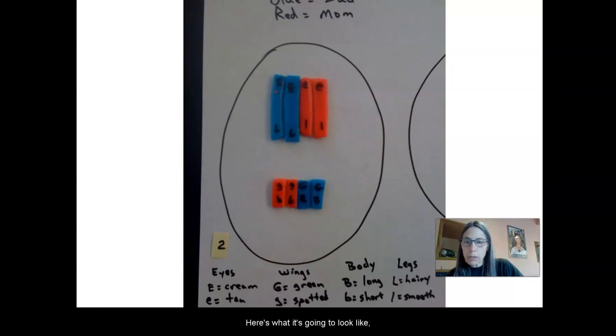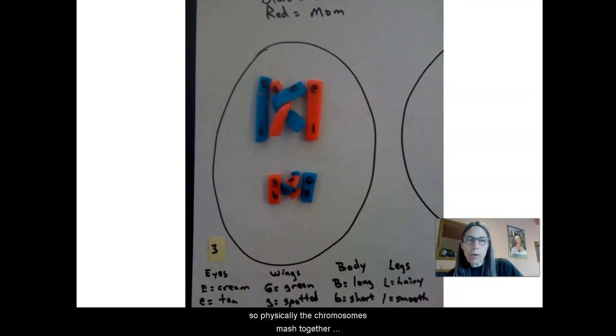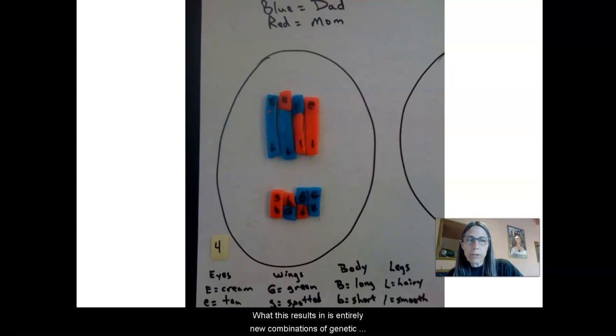So here's what it's going to look like. So physically, the chromosomes mash together, essentially, and a piece of one chromosome trades place with another. What this results in is entirely new combinations of genetic material. Here we have a chromosome that is now a mixture of what came from this person's biological dad and what came from this person's biological mom. So this is a new chromosome produced by meiosis as the result of crossing over.